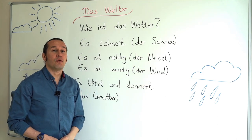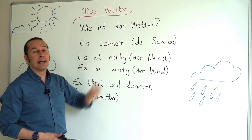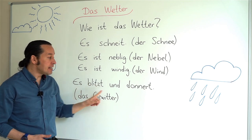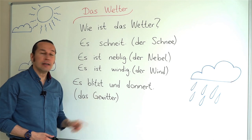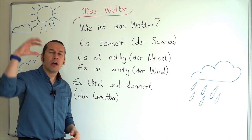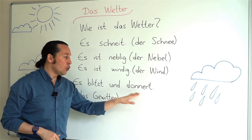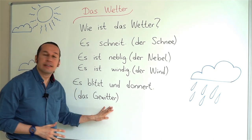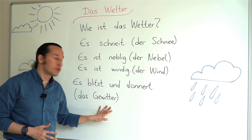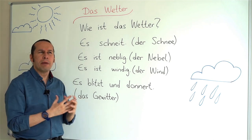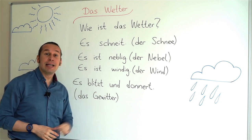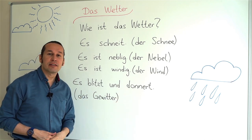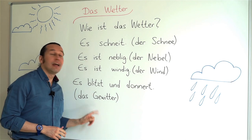'Der Schnee' stands for snow, and it is snowing is 'Es schneit.' Here we have the sentence 'Es blitzt und donnert.' 'Blitzen' is a verb that stands for lightning flashes, and 'donnert' means thunder. So that stands for a thunderstorm — 'Das Gewitter.' It flashes and there's thunder, so I say 'Es blitzt und donnert.' 'Das Gewitter' means thunderstorm.